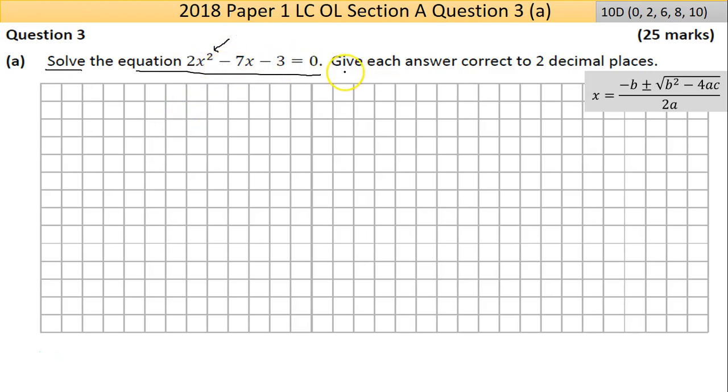Now quadratic would always have two answers. In this case, I know from just experience, when they say give each answer correct to two decimal places, that the fast method won't work. And the fast method would be where you open up two brackets and you're trying to find the factors that way.